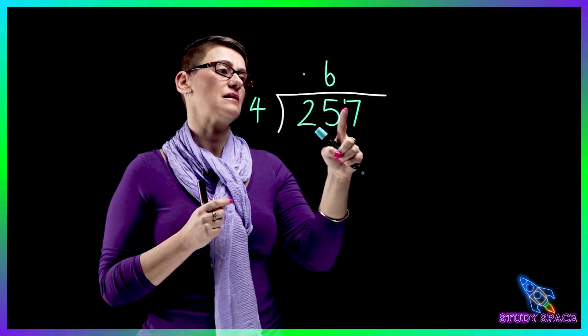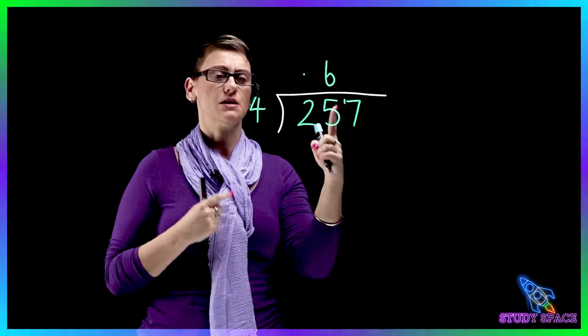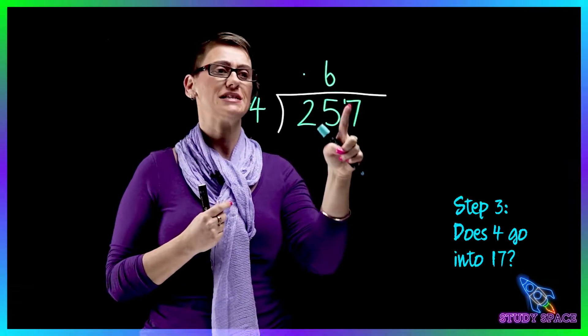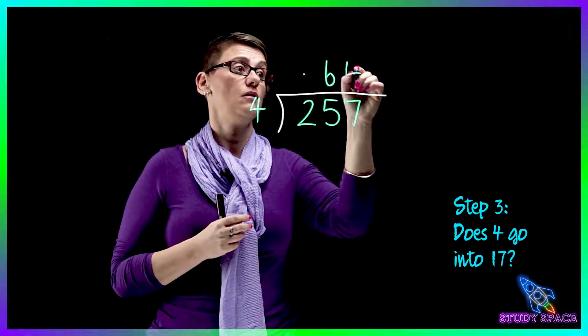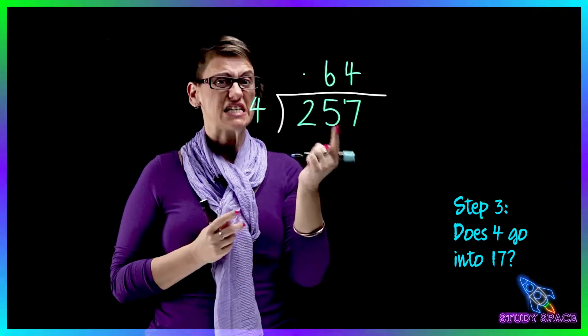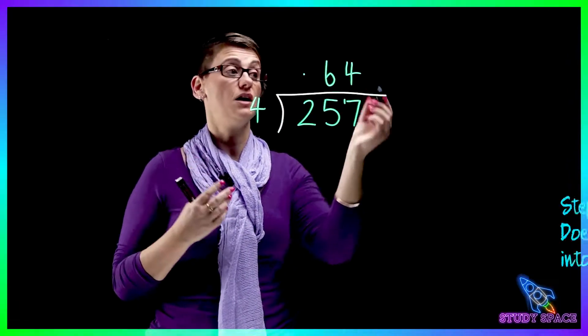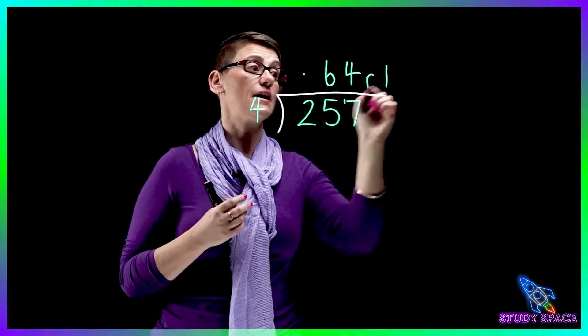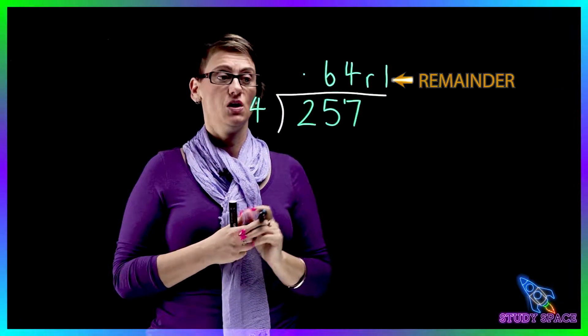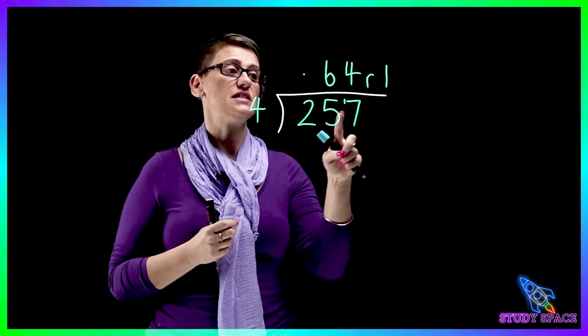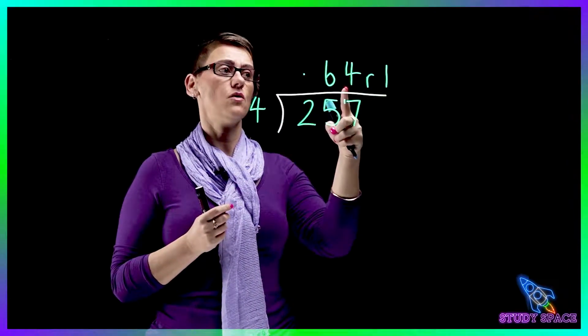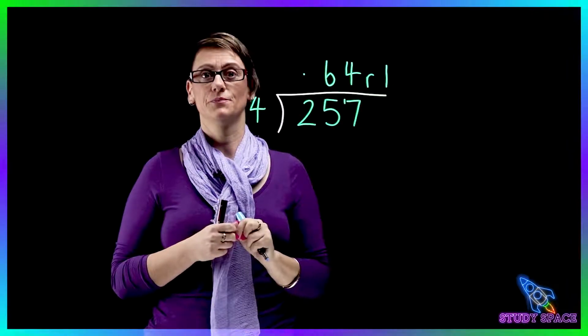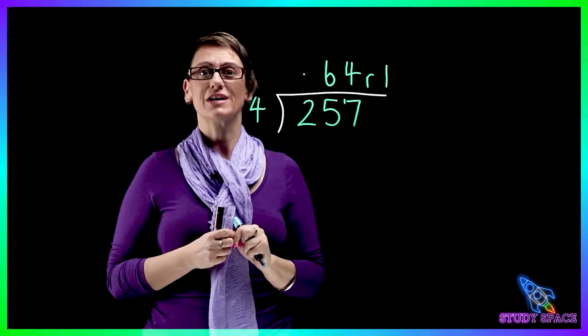So then this becomes 17. So the question is, how many fours are in 17? There's 4. So 4 times 4 is 16, which means I've got 1 left over. So I've got 1 remainder. So 257 divided by 4 equals 64 remainder 1. Let's go have a look at some more examples.